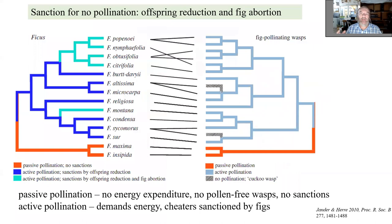There is always tension in mutualism. The figs have to ensure that pollinating wasps do not start cheating. A wasp can cheat a little by entering the same fig as an honest fig wasp that will pollinate for it. With passive pollinators, there is not much activity where cheating is possible. But with active pollinators, collecting pollen takes time and energy. Interestingly, it is the species of figs hosting active pollinators that develop penalties for low pollination: if a developing fig is not properly pollinated, it will often abort.